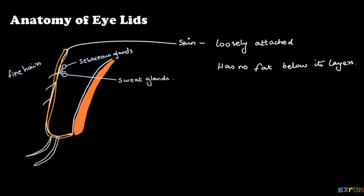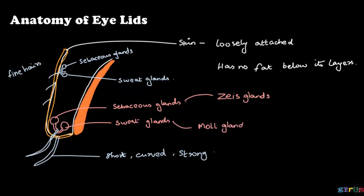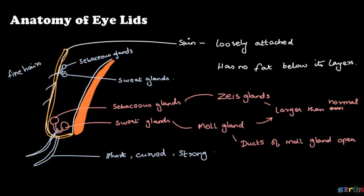At the margin of the eyelid, there are comparatively short hairs compared to the rest of the body. They are curved and strong, and associated with both sebaceous and sweat glands. The sebaceous gland here is called the Zeis gland, whereas the sweat gland is called the Moll gland. They are larger than normal. The ducts of the Moll gland open into the sebaceous gland, whereas the Zeis gland ducts also open directly into the hair follicles.